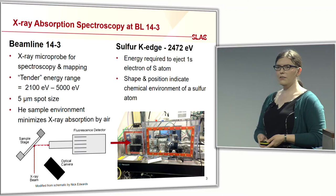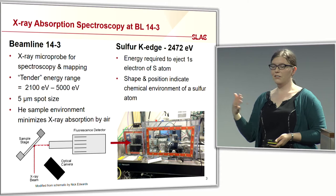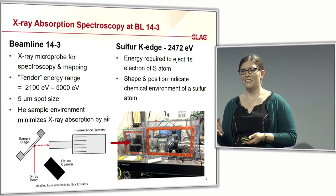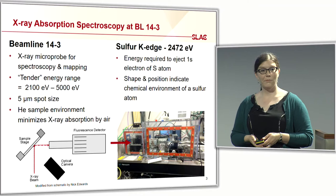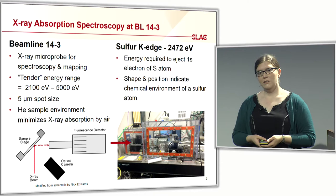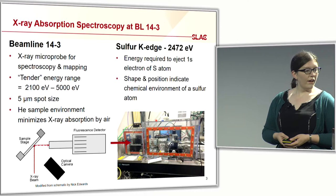Beamline 14-3 is an X-ray microprobe in the tender X-ray regime, which is about 2,100 eV to 5,000 eV. Above that you have hard X-rays, below that you have soft X-rays, and in the tender range in between — it makes me think of a nice steak: tender, well-done X-rays, rare X-rays. What's unique about this beamline is we have a very small spot size — five microns — so we can get very high spatial resolution, and we also have a helium sample environment to prevent X-ray absorption from the air.